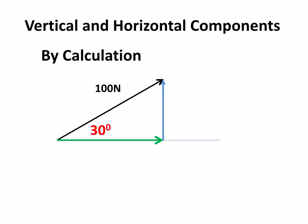By calculation, the horizontal is the cosine of this angle times the hypotenuse, because the horizontal here is the adjacent. Cosine of 30, 0.866 times 100 gives me 86.6 newtons.